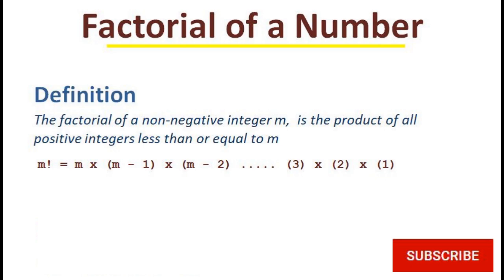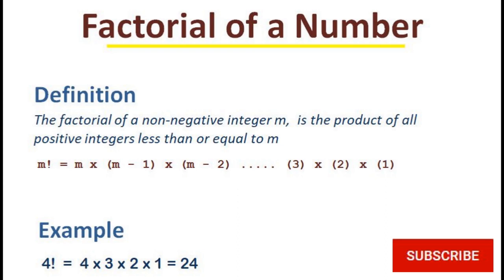For example, factorial of 4 is 4 into 3 into 2 into 1. Once you reach 1, that is the hard stop — you stop and generate the multiplication. Similarly, factorial of 5 is 5 multiplied by 4 into 3 into 2 into 1. And factorial of 10 would be 10 into 9 into 8 into 7 and so on till 3, 2, and 1.